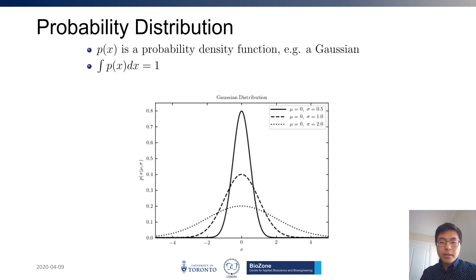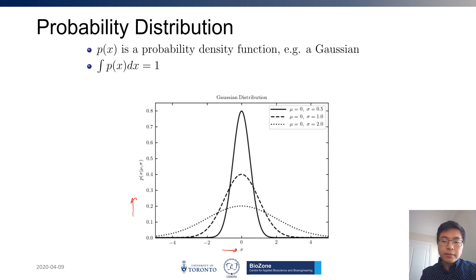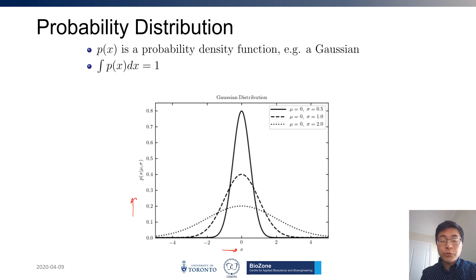Let's begin with the simple Gaussian probability density. Essentially, a probability distribution or density is a function that maps one value to its probability. So here we have one variable x, and where the curve is high, it represents a greater probability of that value of x happening. In the Gaussian distribution, we have two parameters, mu and sigma. Mu is the mean, sigma is the standard deviation. Parameters of a distribution specify the shape of a distribution.